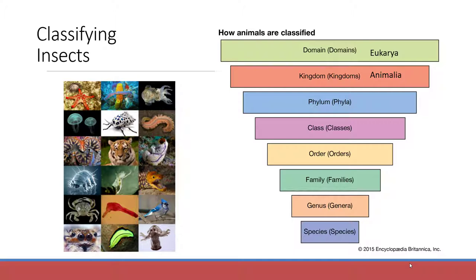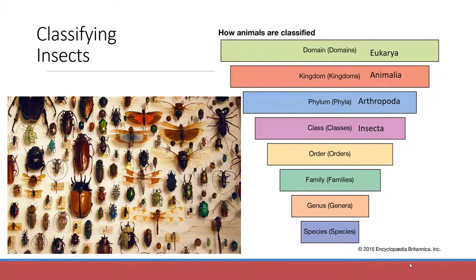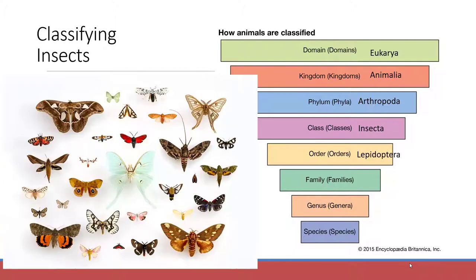Phylum starts to narrow things down a bit more. Insects are in the phylum Arthropoda, which separates them from humans and other mammals — we're chordates in phylum Chordata. You can also see from this image that there are lots of other types of arthropods, not just insects. What encompasses only insects is the class Insecta, within phylum Arthropoda, kingdom Animalia, and domain Eukarya.